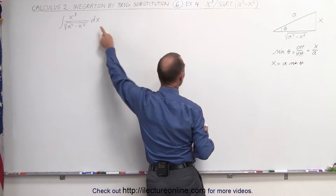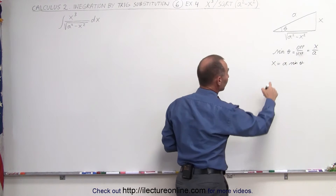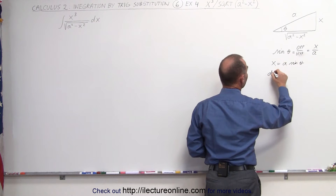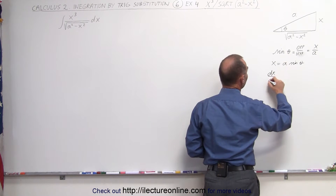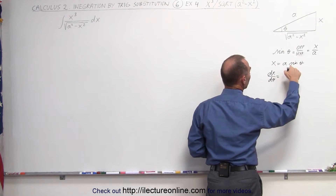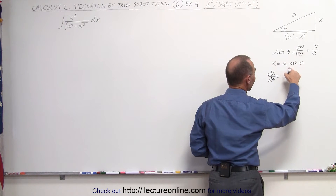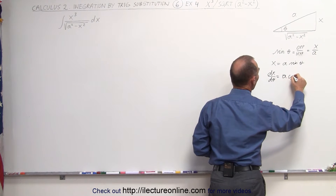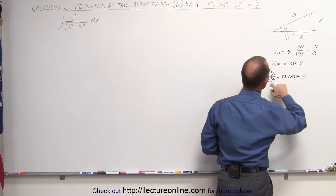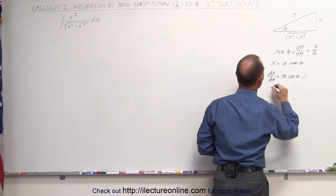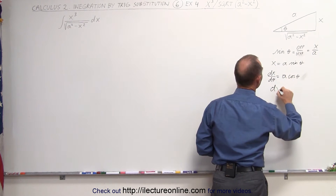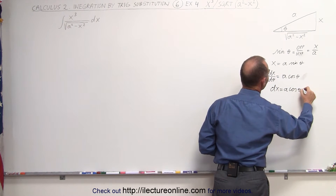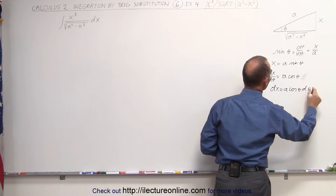Since we have a dx in here, what we can then do is take the derivative of this. The dx with respect to theta is equal to the derivative of a sine theta, which becomes a times the cosine of theta. Moving d theta over, we can write that dx is equal to a times the cosine of theta d theta.